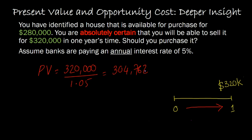Put differently, if somebody asked what is the absolute maximum that you'd be willing to spend on this house, we'd say 304,762. Why? Because if the house costs something like $310,000 today, you'd say: why should I spend $310,000 here only to get $320,000 from selling the house one year later, when I can put 304,762 in the bank, earn 5% on that, and get $320,000 myself? If the house costs something less than this — count me in.